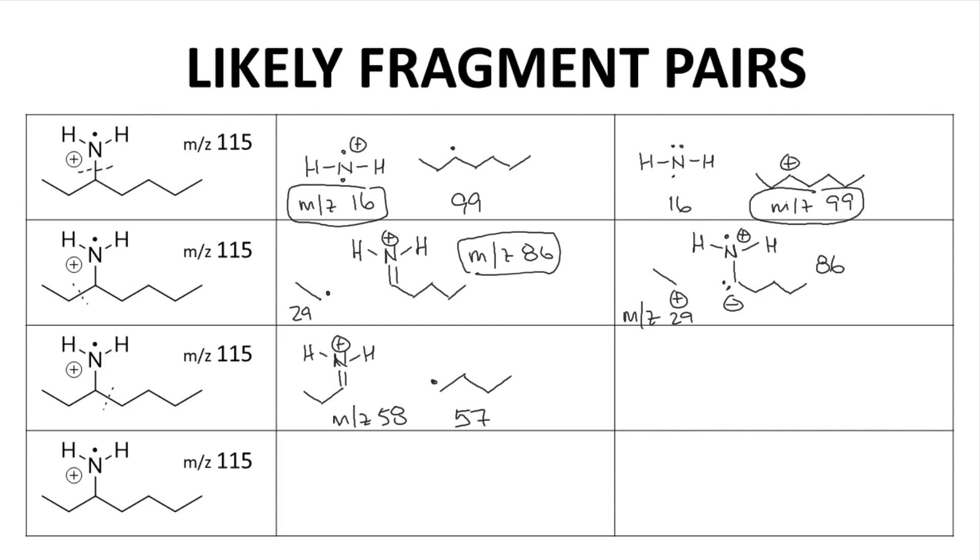And the other way to break bond C would give us this neutral fragment which has a mass of 58, but we won't observe it, and this cation fragment which has an Mz of 57.